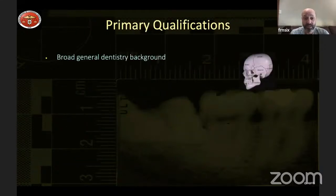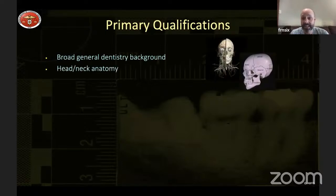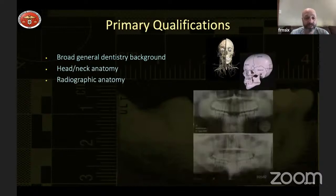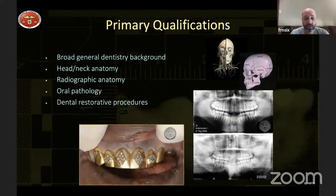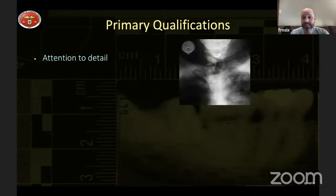Some qualifications include a broad general dentistry background, good head and neck anatomy, radiographic anatomy, the ability to determine pathologies from teeth, and knowledge of oral pathology and restorative procedures. We have to pay close attention to detail. For example, if we had a victim in a fire, unusual dental work like a decorative grill could be used pretty easily to identify somebody. Dentists are generally detail-oriented people, working in small spaces and measuring in millimeters.